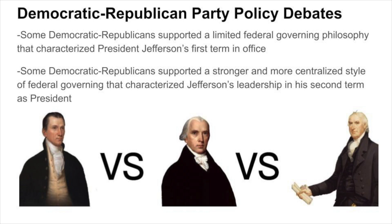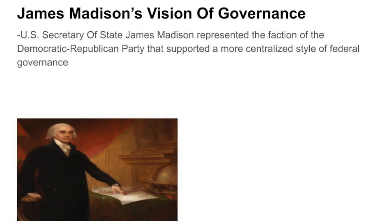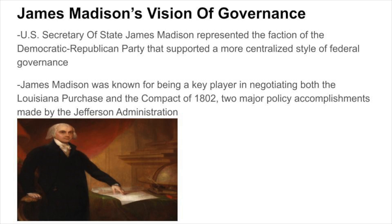U.S. Secretary of State James Madison represented the faction of the Democratic-Republican Party that supported a more centralized style of federal governance. James Madison was known for being a key player in negotiating both the Louisiana Purchase and the Compact of 1802, two major policy accomplishments made by the Jefferson administration.